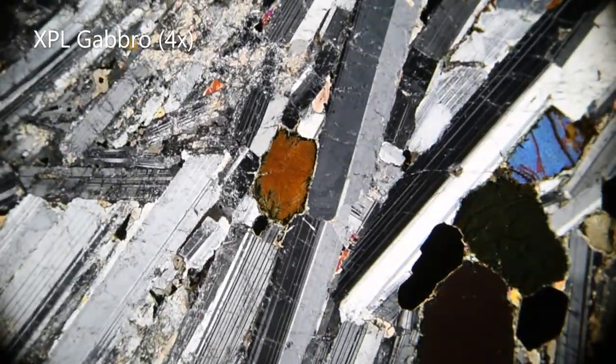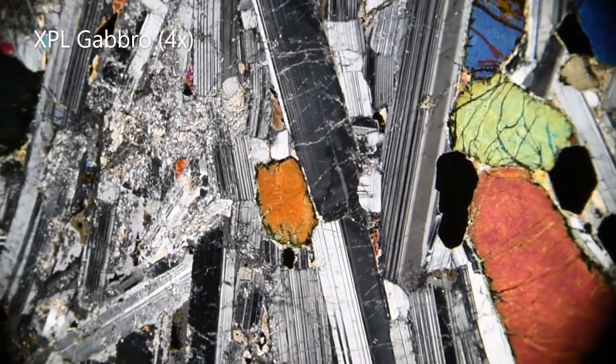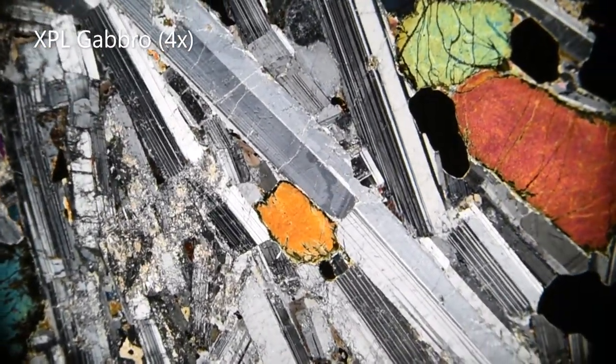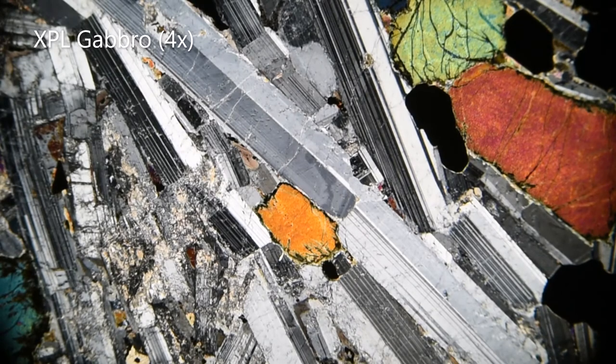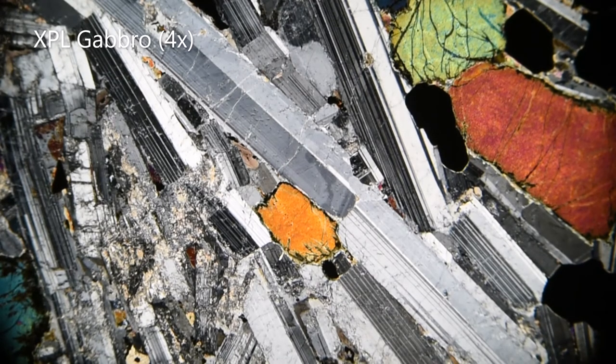In cross-polar view, the feldspar has stripes, which we call twinning. This, along with the low-interference colors, are primary identifying features of feldspar.